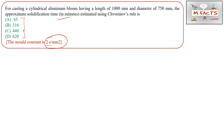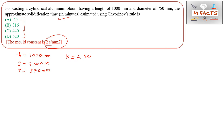Given data: for the cylindrical bloom, we can take length as height h, so h = 1000 mm. Diameter = 750 mm, which gives radius r = 375 mm. The mold constant k = 2 seconds per mm squared. Since k is in mm units, all dimensions must also be in mm.